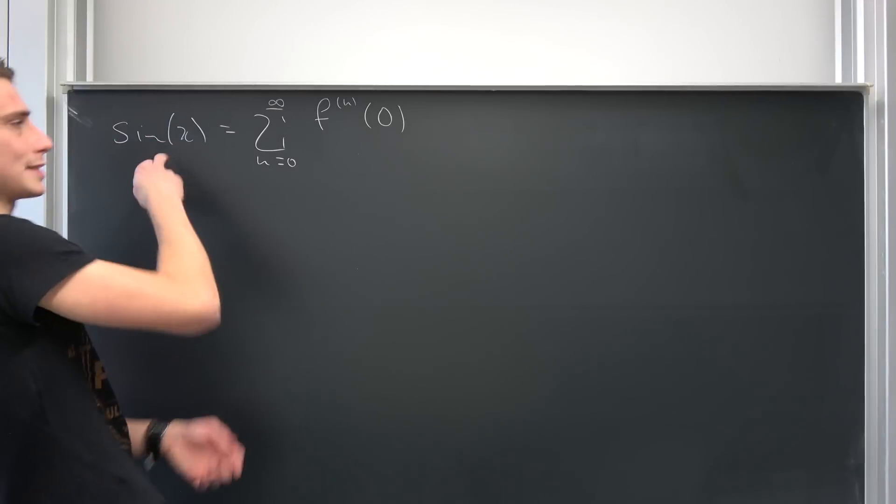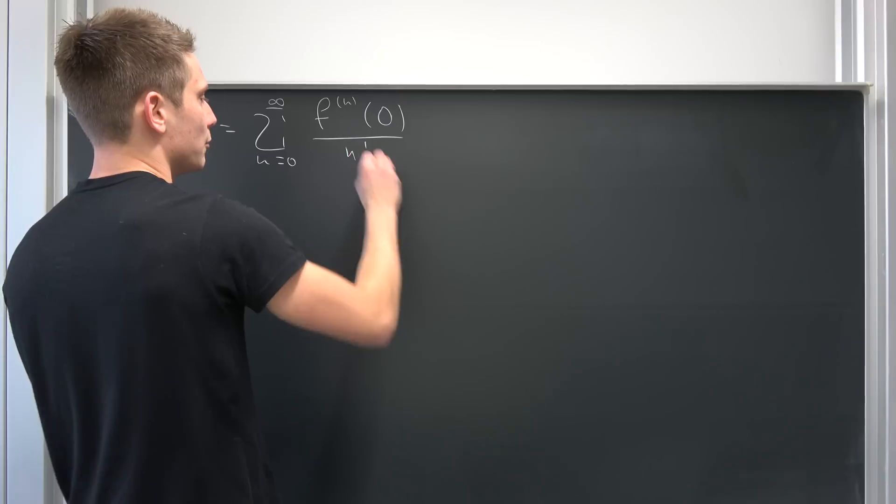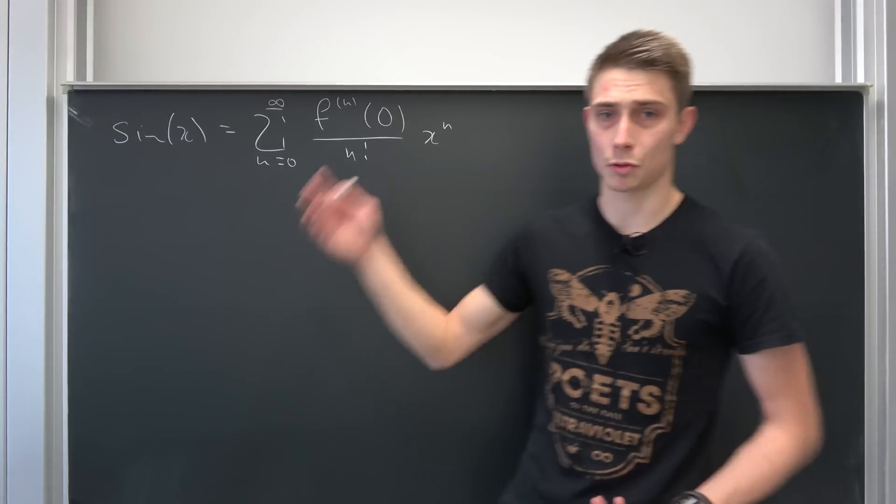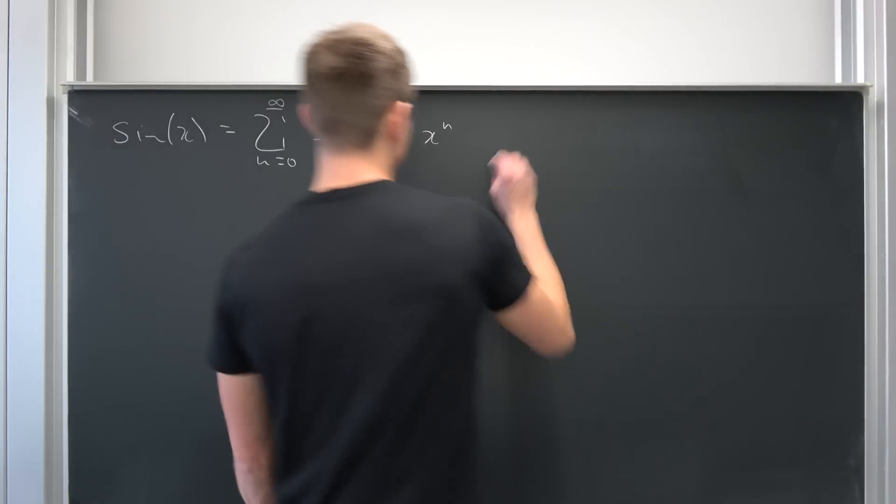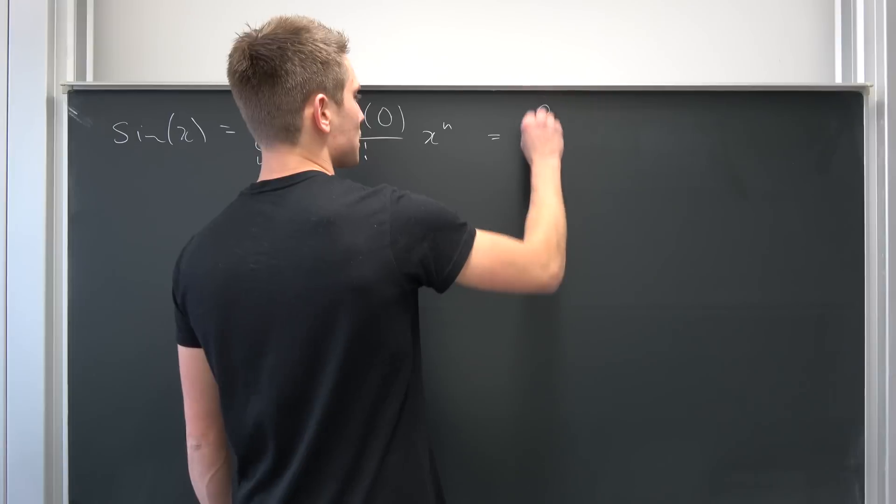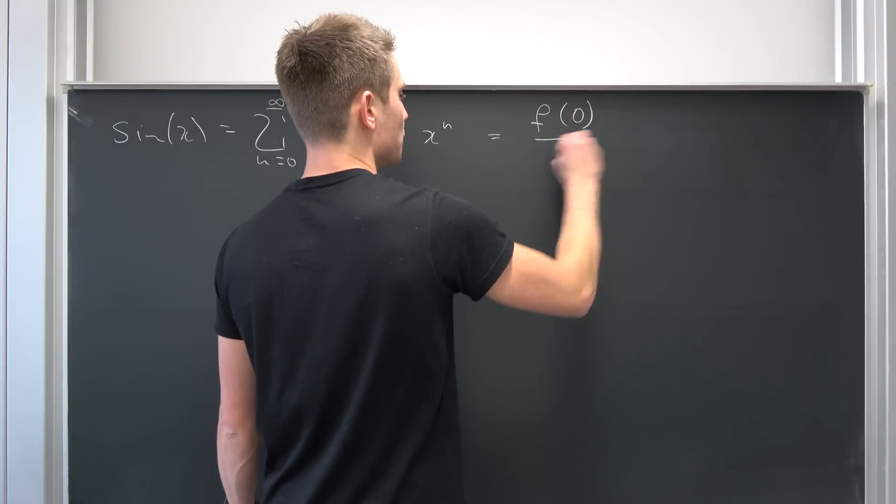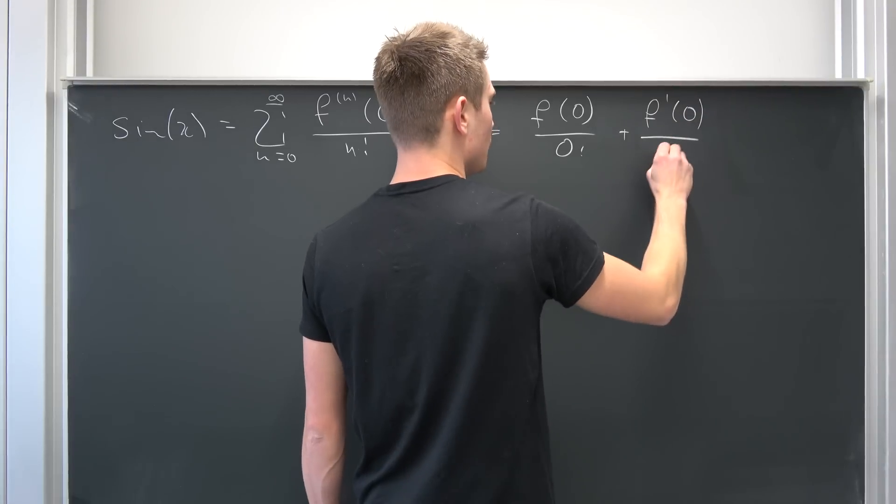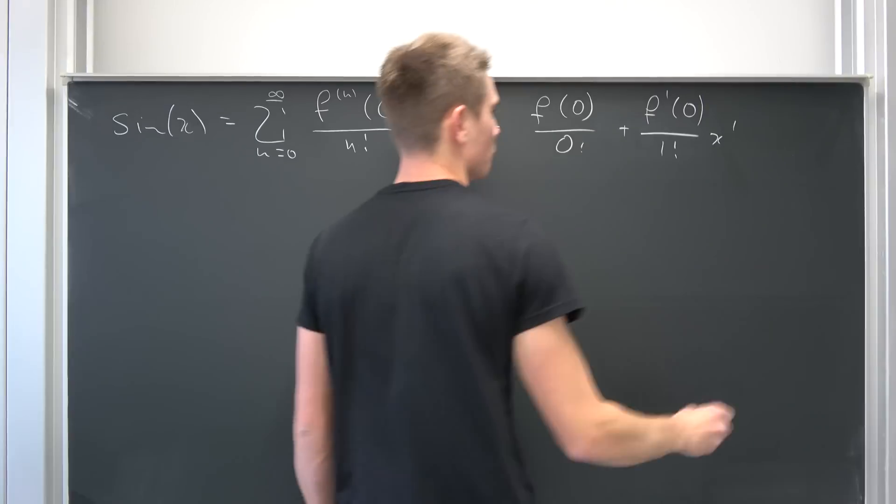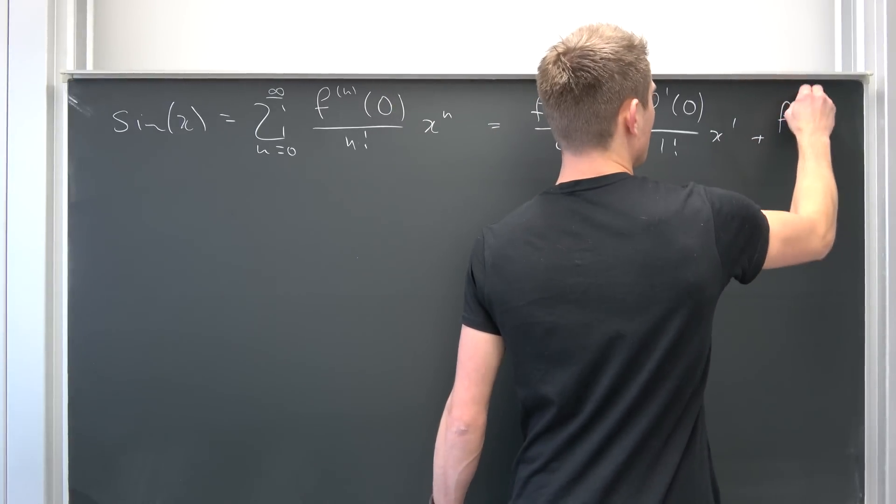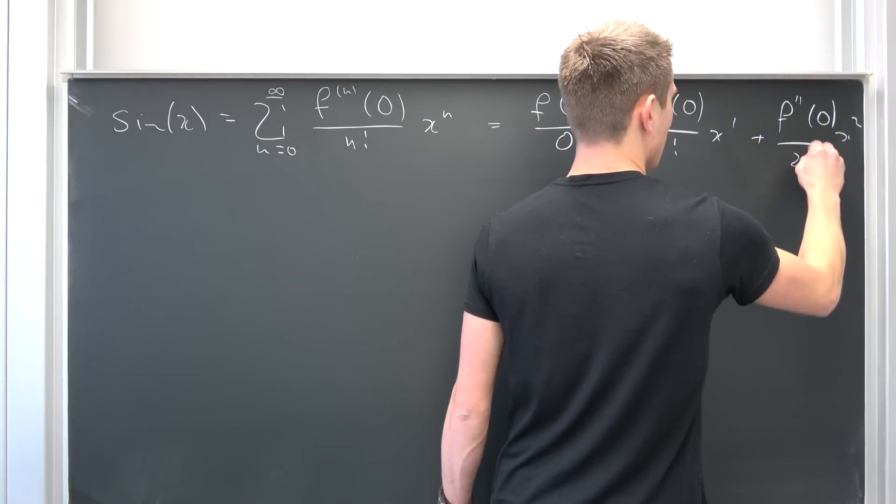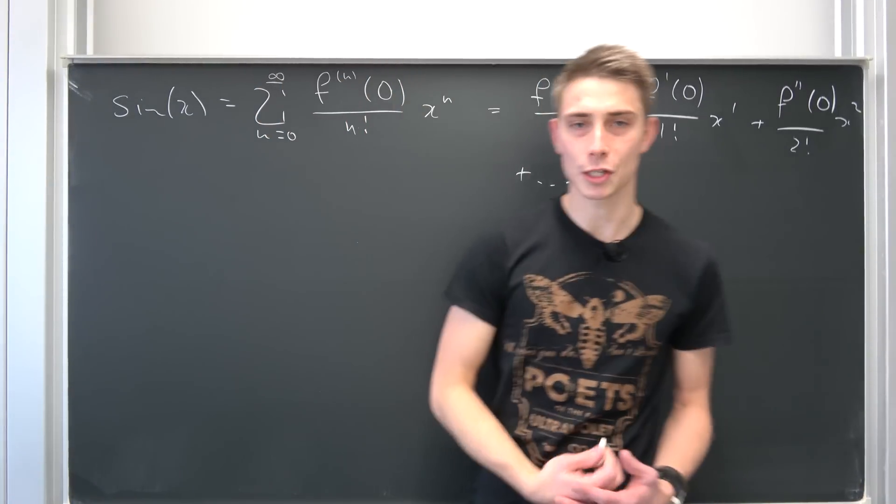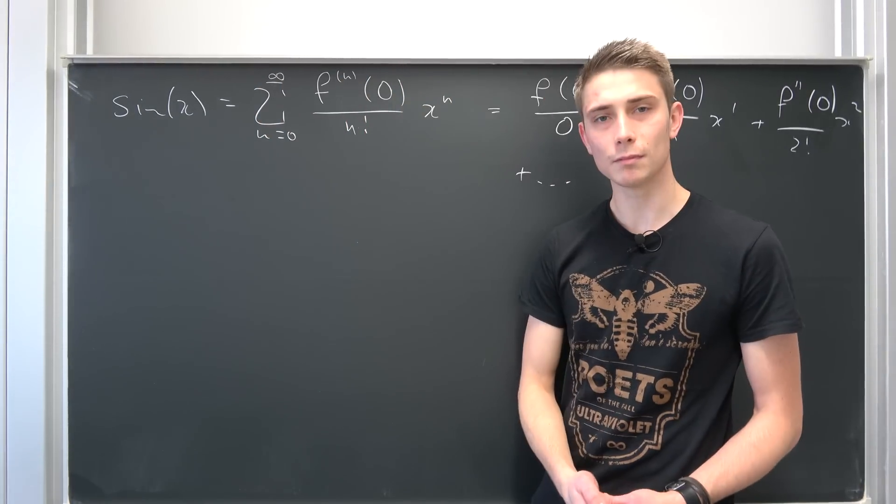In this case, of the nth derivative of the sine, so f of x is our sine of x, over n factorial times x to the nth power. Okay, this is what we want to do. We can write it out once again a little bit. So the first part is just f of zero over zero factorial plus f prime of zero over one factorial times x to the first power, plus f double prime of zero x squared over two factorial plus dot dot dot. Many, infinitely many more terms after that.